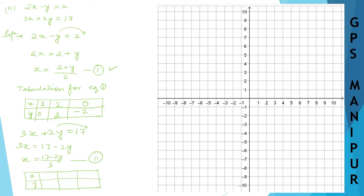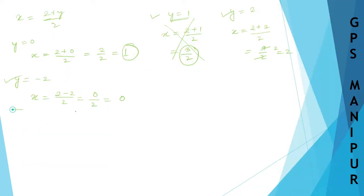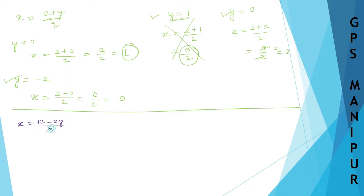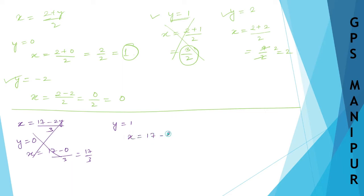The equation for the table is x equals 17 minus 2y divided by 3. When y is equal to 0, x will be 17 divided by 3, which we cannot take. When y is equal to 1, x will be 17 minus 2 into 1 divided by 3, which is 15 divided by 3, so x is 5.